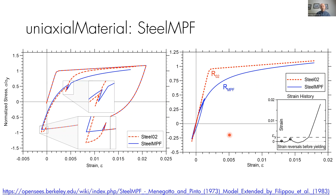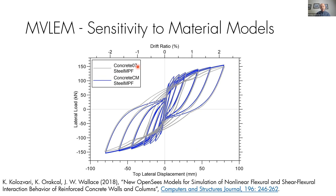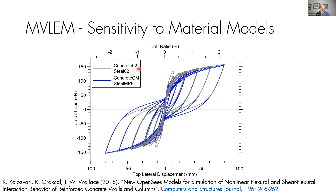Here's an example comparing material model choices. For specimen RW2, using Concrete CM and Steel MPF gives quite good results. Using Concrete07 gives a different-looking hysteretic shape due to simplification. Using Concrete02, which lacks gradual gap closure, produces very pinched behavior near zero displacement as the gaps close abruptly. This demonstrates how choice of material models directly affects predicted hysteretic behavior.